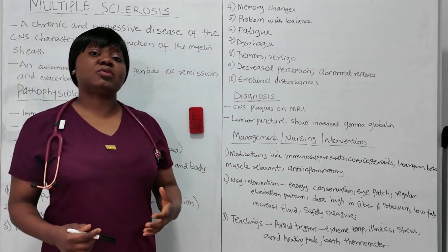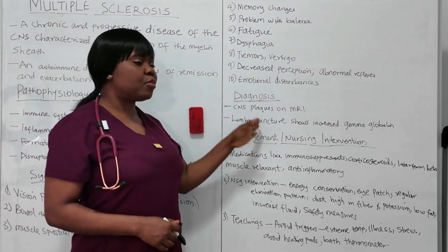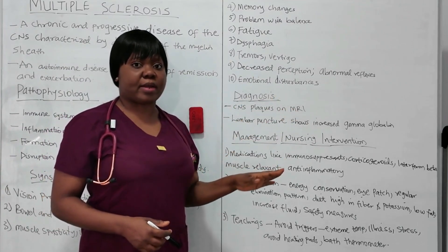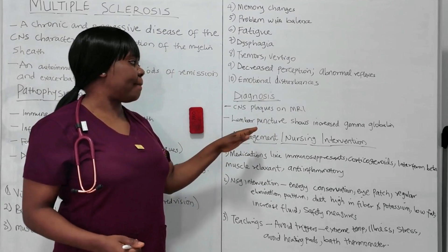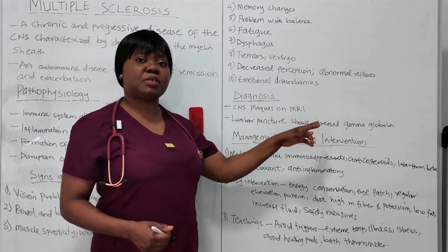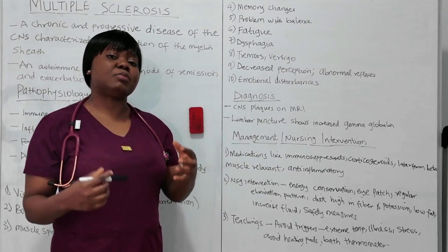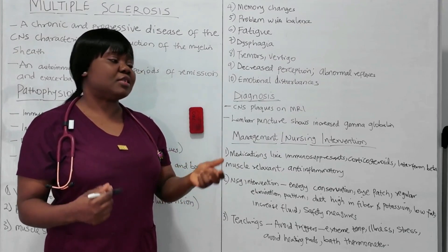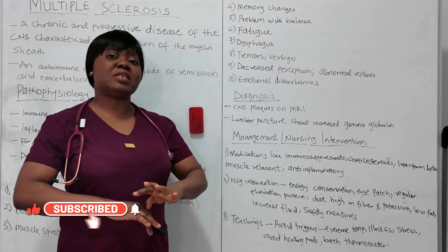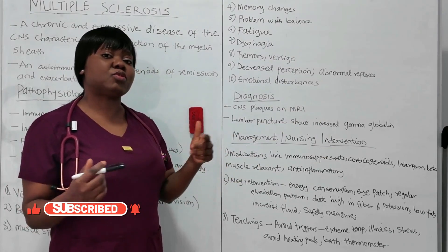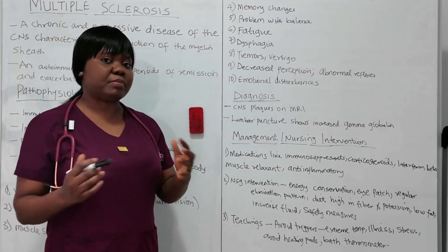To diagnose multiple sclerosis, the first indicator is the presence of multiple scars, or CNS lesions, on MRI. Another diagnostic tool is a lumbar puncture or spinal tap, which will show increased protein, particularly gamma globulin, in the cerebrospinal fluid. When the CSF is analyzed and tested, there will be an increased presence of gamma globulin, while in the serum it will be normal — indicating that something is affecting the brain or the myelin sheath.